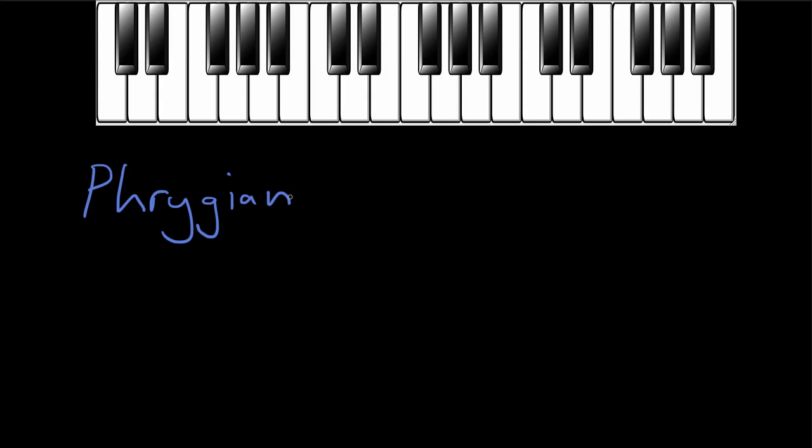The Phrygian mode, just like any other mode, is a white note scale that goes from one particular note to another particular note, and in this case it's E to E. So our Phrygian scale goes from E to E, and of course it's going to go through all the other letter names on its way from E to E: E, F, G, A, B, C, D, E. And that will give us the sound of our Phrygian mode.